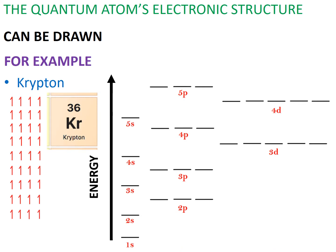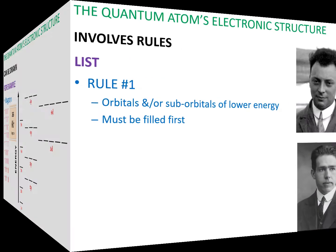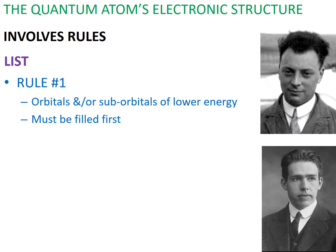This diagram embodies three rules proposed by three of Schrödinger's contemporaries. One of these rules, called the Aufbau Principle, was developed by Wolfgang Pauli and Niels Bohr. And their rule was, orbitals and sub-orbitals of lower energy must be filled first.